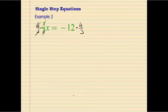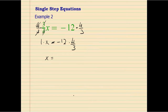We will have 1 times x equals negative 12 times 4 over 3. Now, 1 times x is x. For negative 12 times 4 over 3, we can simplify first then multiply — that is the easiest approach. Simplify 12 by 3 to get 4, and simplify 3 by 3 to get 1, giving us negative 4 times 4 divided by 1.